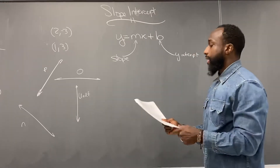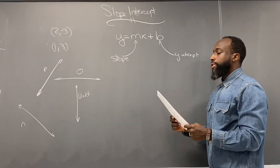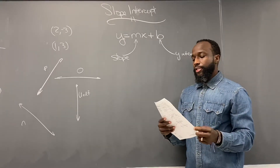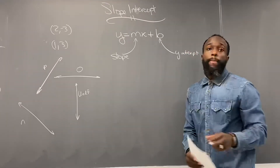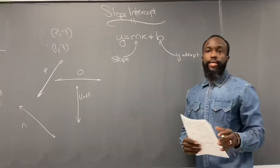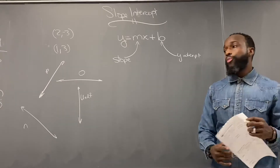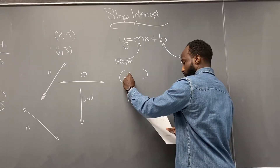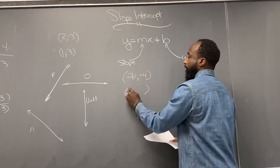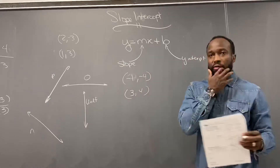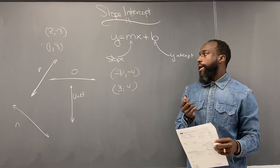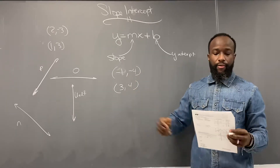Let's look at number two. Turn your paper over to the fourth page — actually the third page. Number two has two points: negative one, negative four, and three, four. Yesterday we also talked about finding the slope. How would you find the slope of those two points?